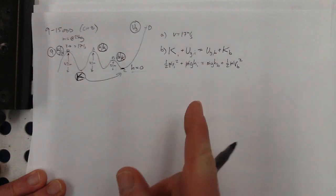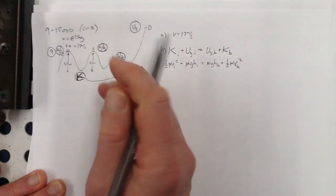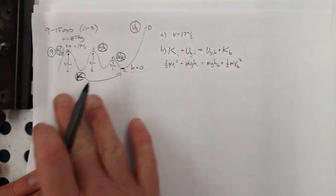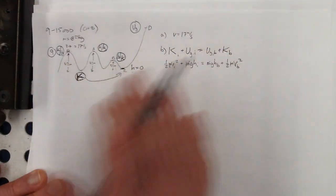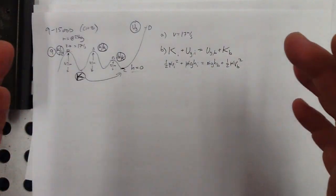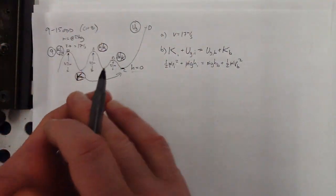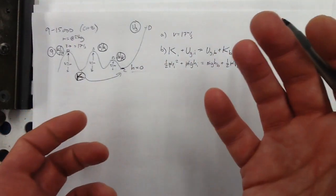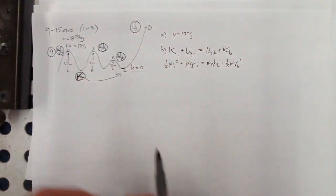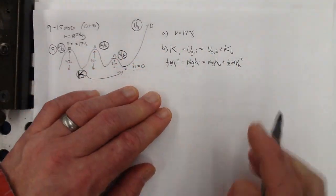Now, if there's a spring involved in your energy problem — one-half kx squared — that does not have mass in it, so then mass does matter. Which makes sense: if you have a heavier mass compressing against a spring, you won't get as much height or velocity when it launches the object. But no springs here.